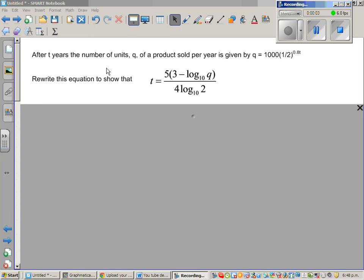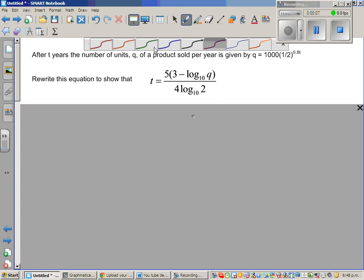After t years, the number of units q of a product sold per year is given by q equals 1,000 times half raised to 0.8t. Rewrite this equation to show that t equals 5 times 3 minus log q base 10 over 4 log 2 base 10. Now they have written, when you write log, it is understood to be base 10.